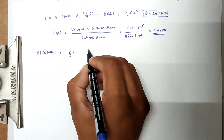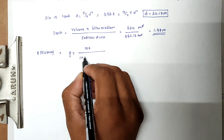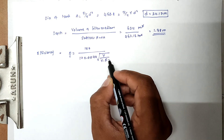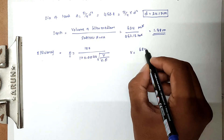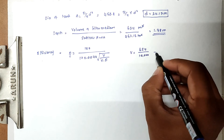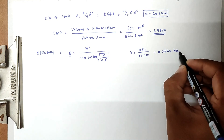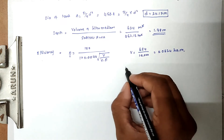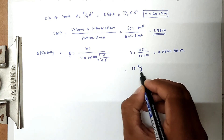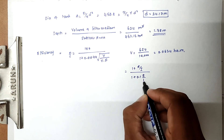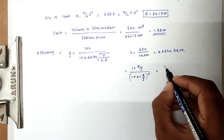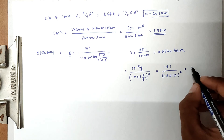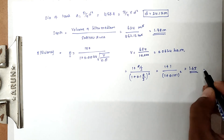For the efficiency of the trickling filter, η = 100 / (1 + 0.0044 × √(y / (V × F))). The volume V equals 624 / 10,000 = 0.0624 hectare meters. The recirculation factor F = (1 + R/I) / (1 + 0.1 × R/I)². With R/I = 1, F = 2 / (1 + 0.1)² = 1.65.